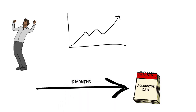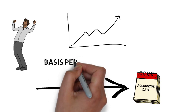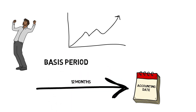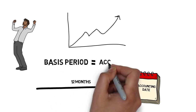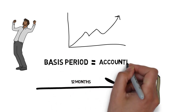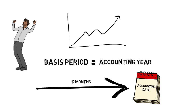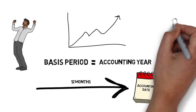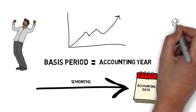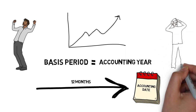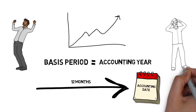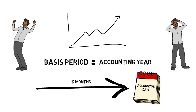Your accounting year is also a 12-month period that ends on your accounting date, so it's fair to say that your basis period is the same as your accounting year. That's easy to deal with, but during the first few years of running your business the rules are different and they can make things complicated.